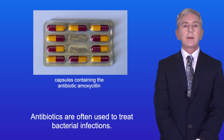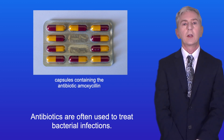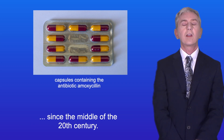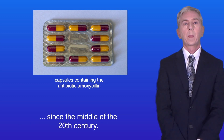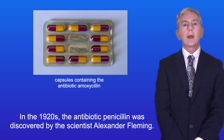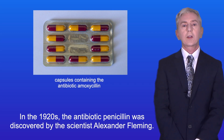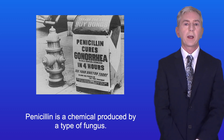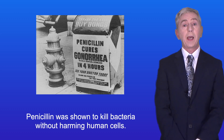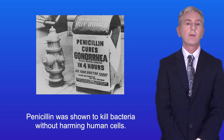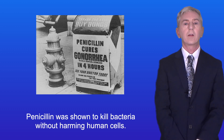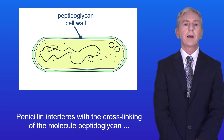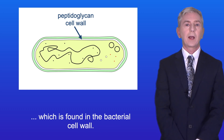Antibiotics are often used to treat bacterial infections, but you need to understand that antibiotics have only been widely used since the middle of the 20th century. In the 1920s the antibiotic penicillin was discovered by the scientist Alexander Fleming. Penicillin is a chemical produced by a type of fungus, and penicillin was shown to kill bacteria without harming human cells. Penicillin interferes with the cross-linking of the molecule peptidoglycan, which is found in the bacterial cell wall.